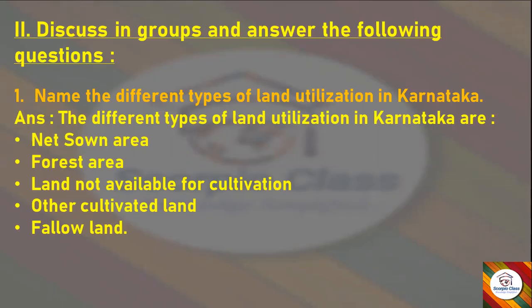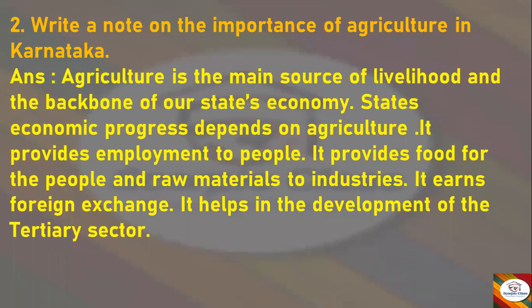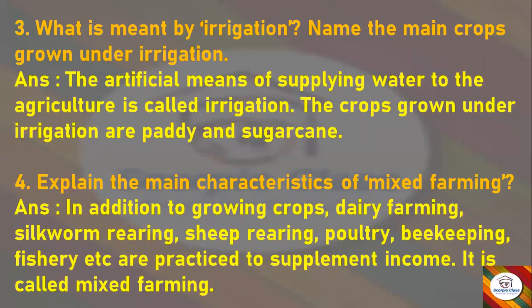Second question: Write a note on the importance of agriculture in Karnataka. Answer: Agriculture is the main source of livelihood and the backbone of our state's economy. The state's economic progress depends on agriculture. It provides employment to people, food for the people, and raw materials to industries. It earns foreign exchange and helps in the development of the tertiary sector.